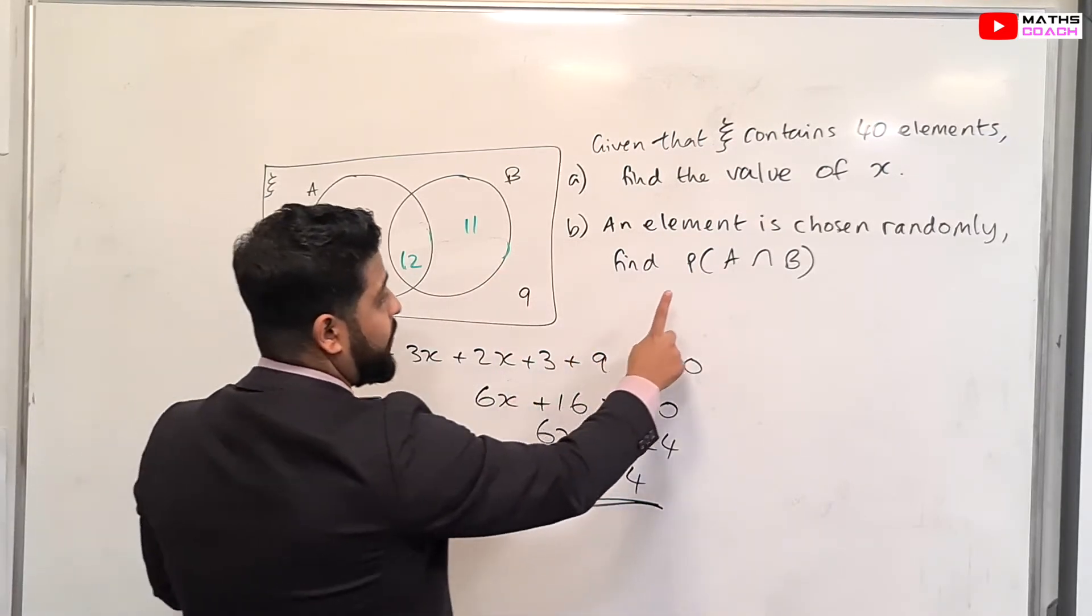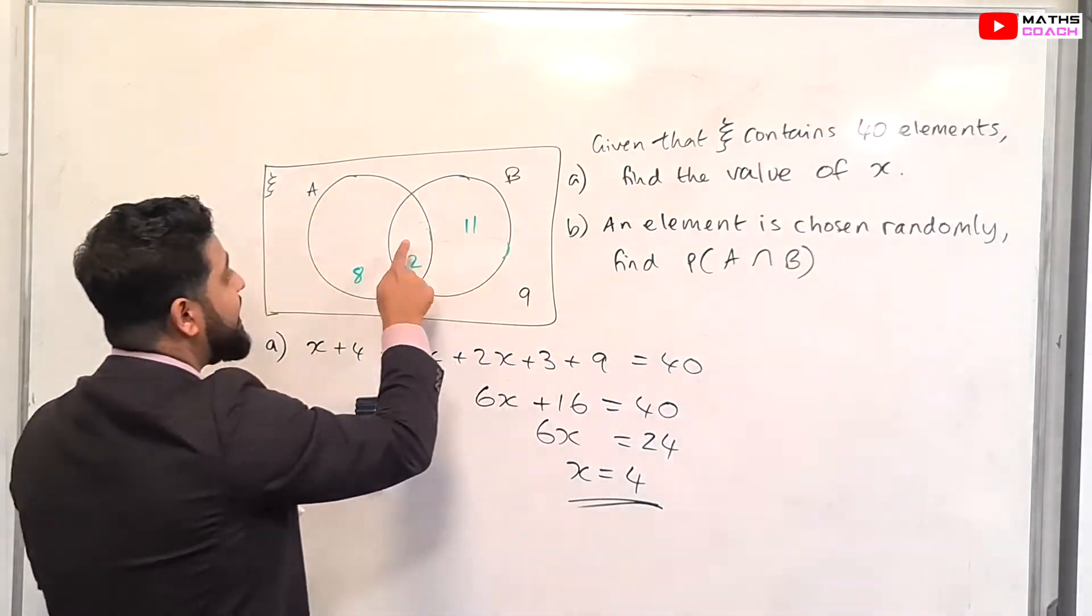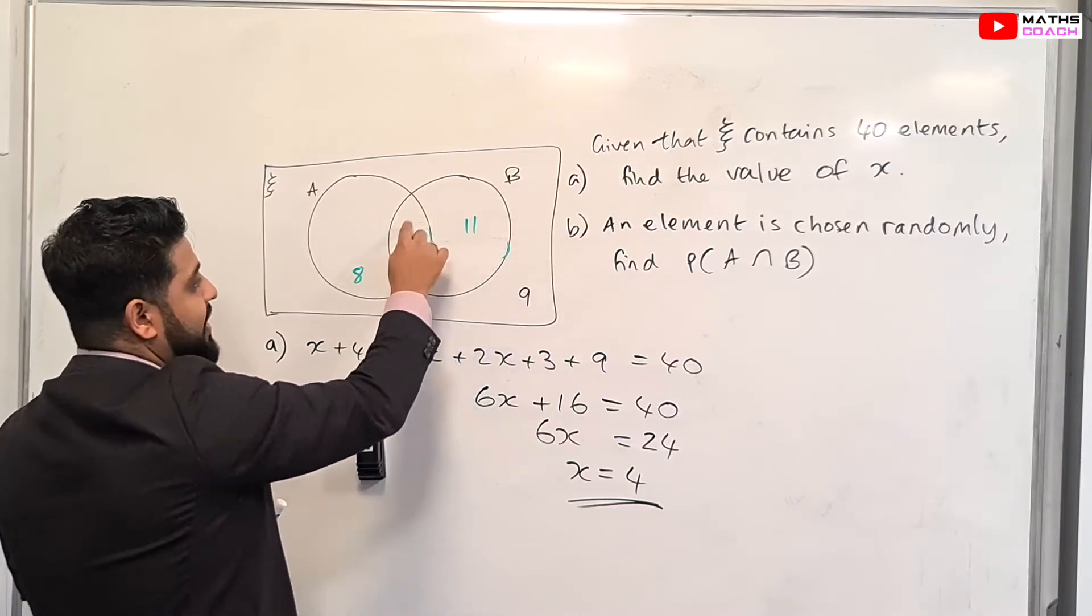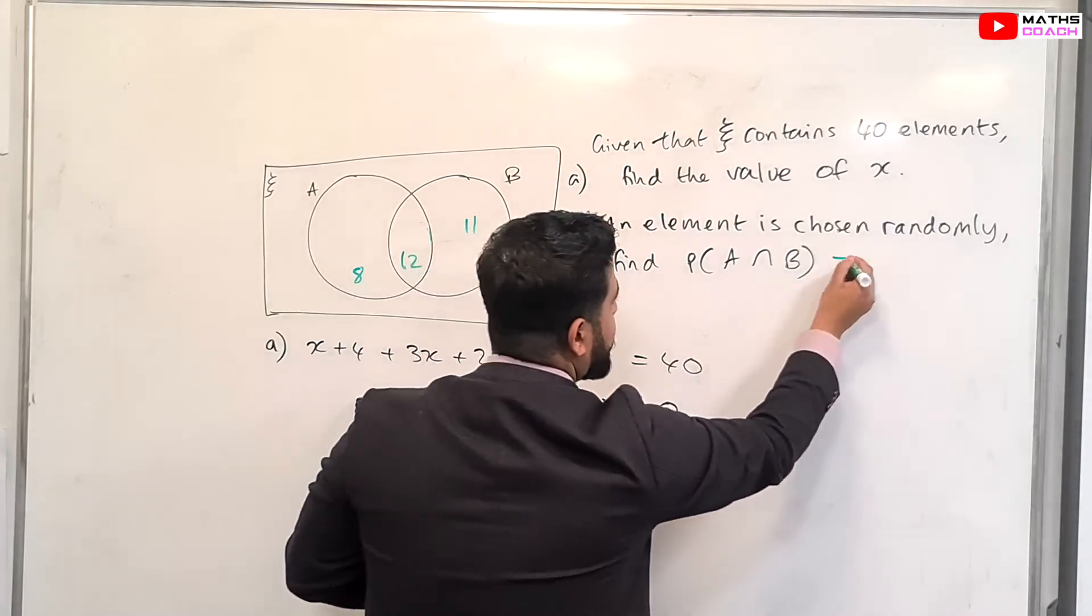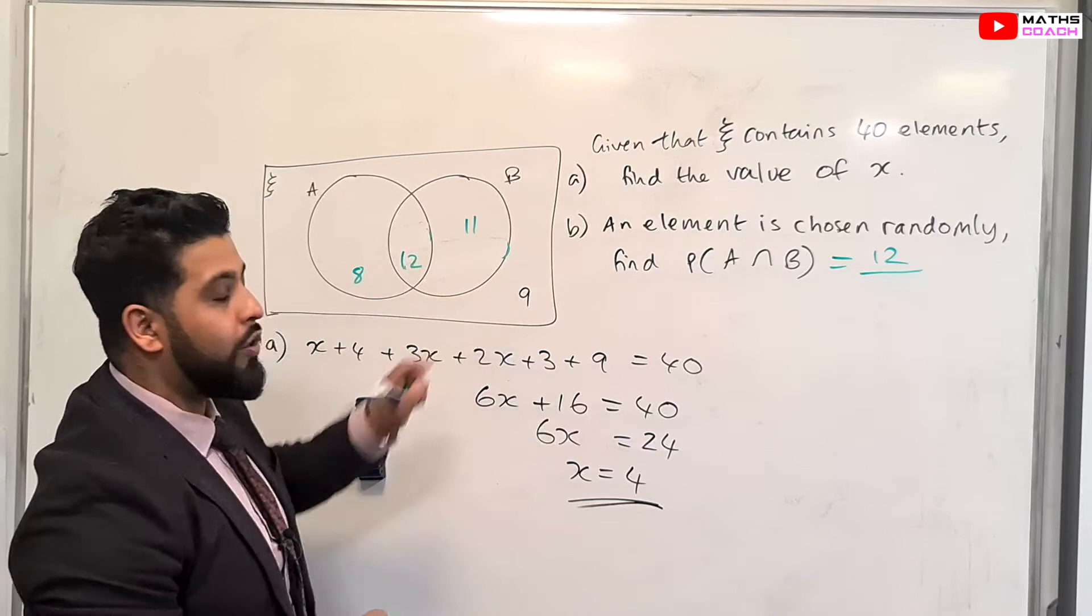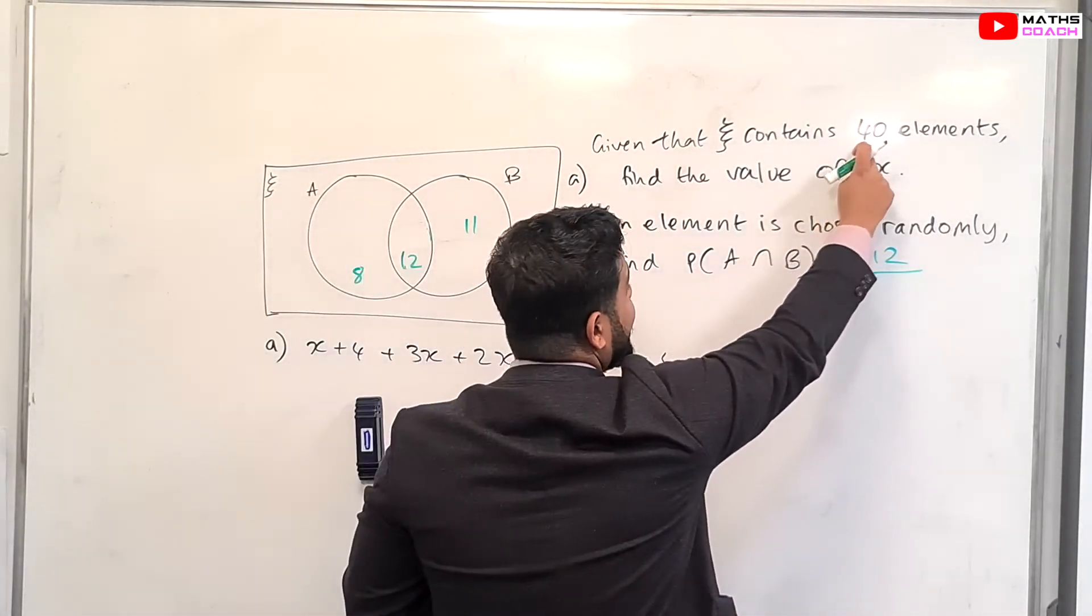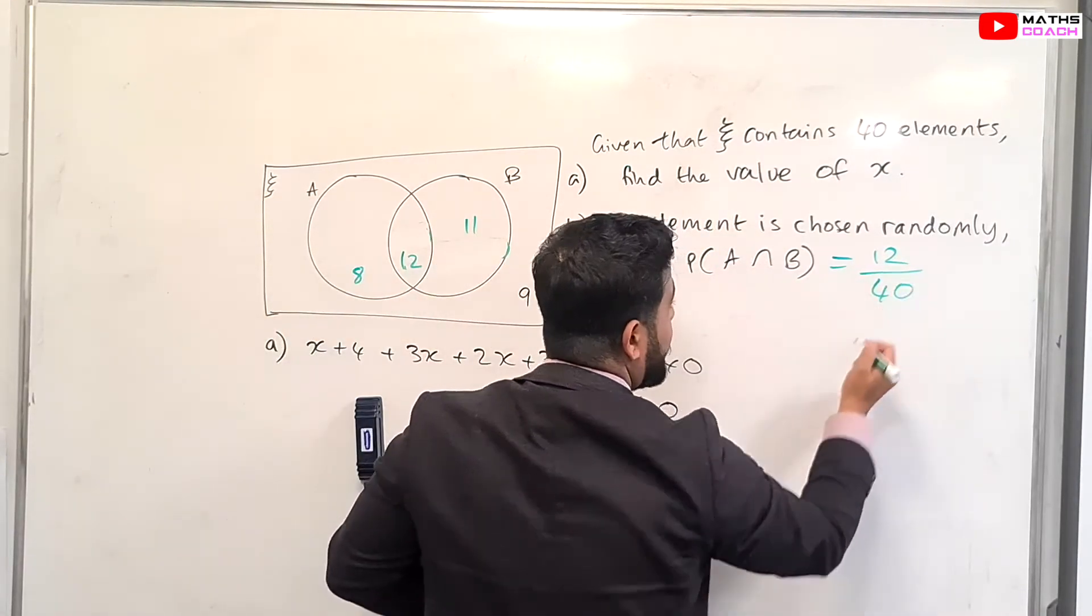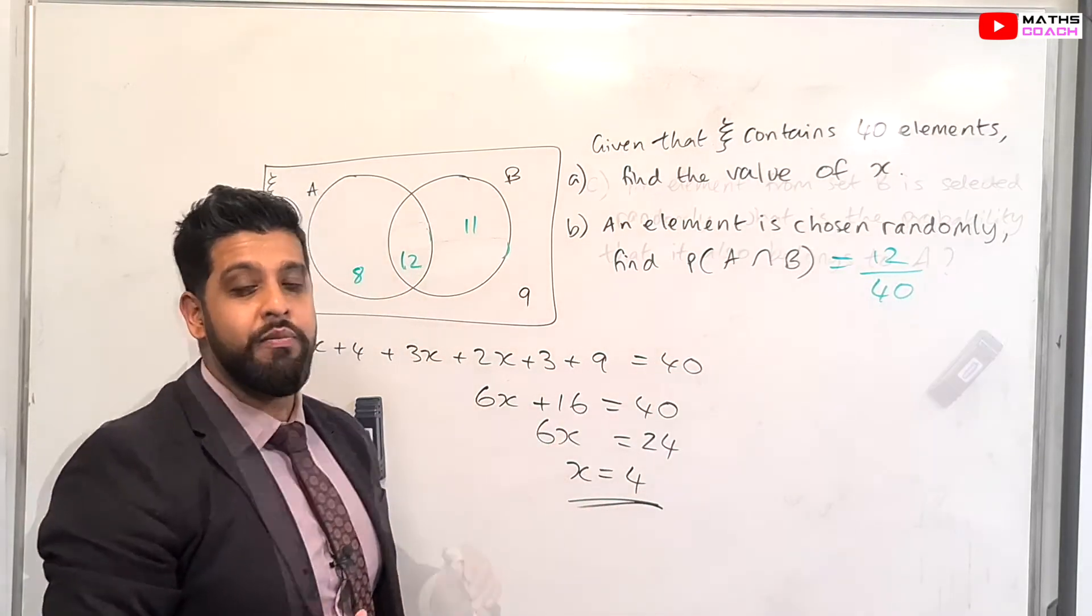Now, what are we asked for here? We ask for the probability of A and B. A and B is this intersection because this part of the Venn diagram is representing the intersection of A and B. So therefore, it's going to be 12 out of the total amount. So we have to add up all of this to find the total amount. But we were told, remember earlier on, it's 40. So it saves us time just to use that rather than add this up. So 12 over 40. And once again, leave the answer as 12 over 40, or you can choose to simplify.